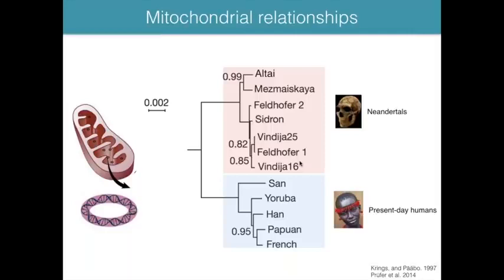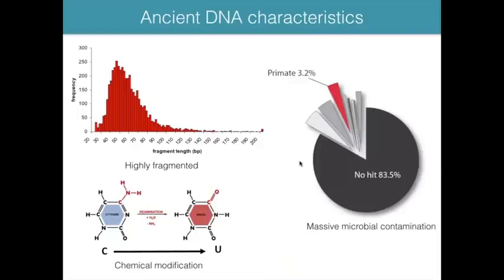But mitochondrial DNA is a single locus inherited only maternally and doesn't rule out some interbreeding. Resolving this required nuclear genomes from Neanderthals, which in the late 1990s weren't feasible due to limited sequencing throughput. Ancient DNA presents specific challenges: it is highly degraded and fragmented into very short pieces — average fragment lengths of 40 to 60 nucleotides — making PCR amplification difficult.